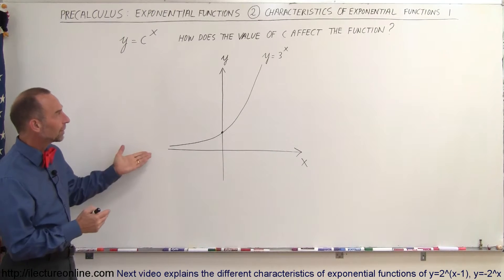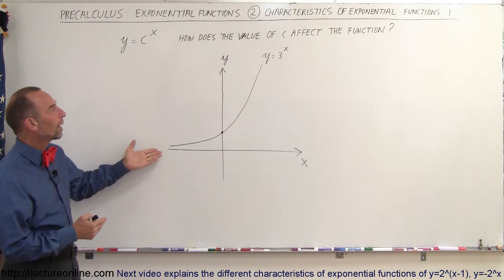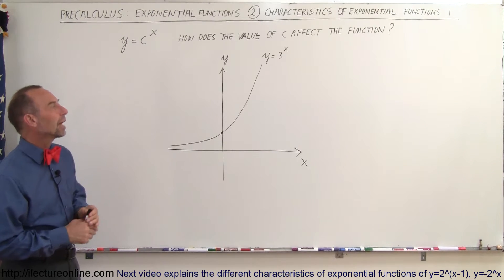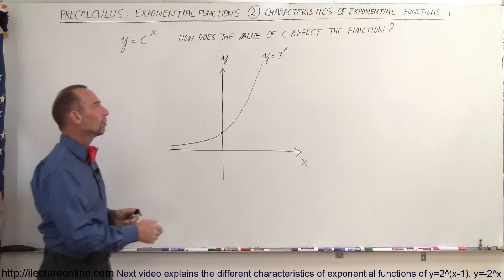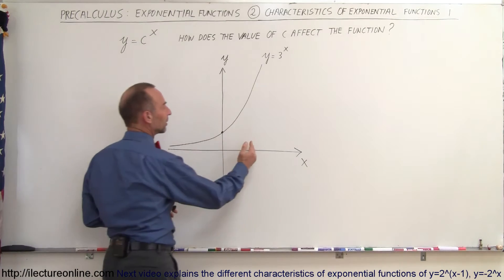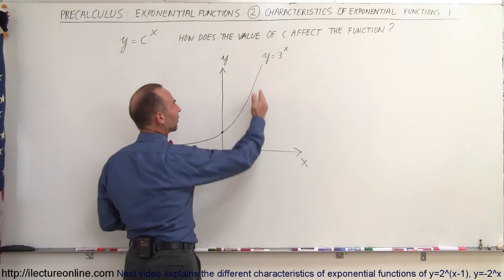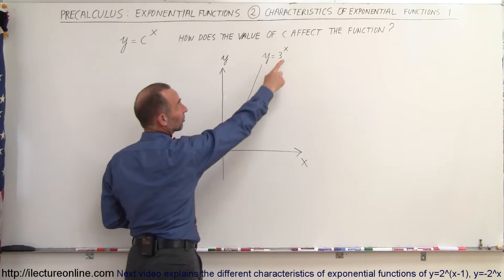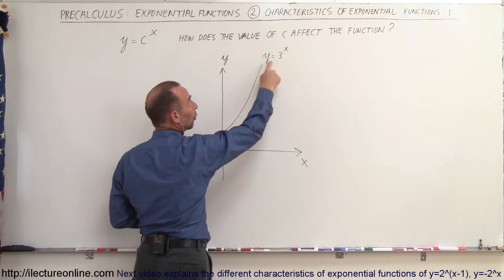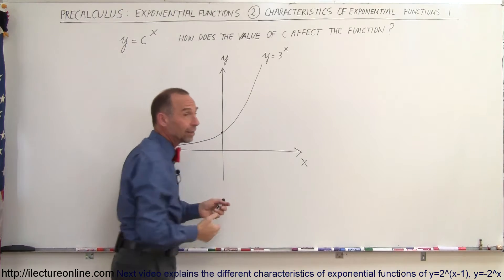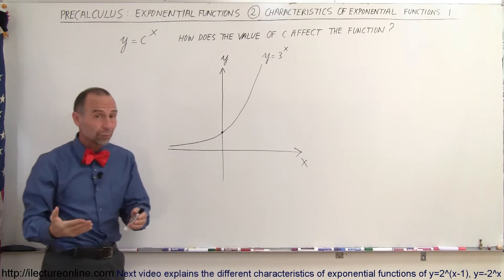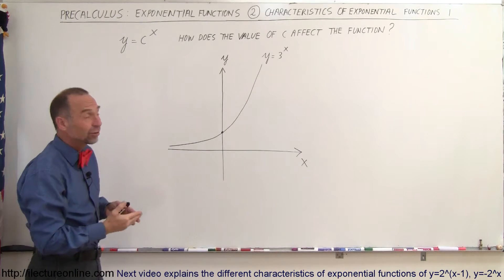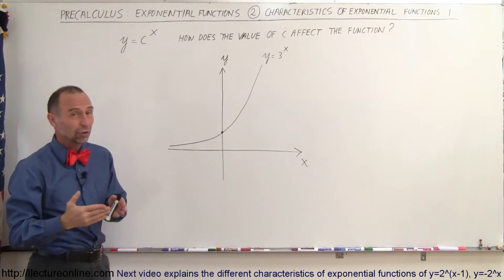Here we have y equals 3 to the x. Notice that as x gets bigger, y gets bigger much faster. For example, when x is equal to 2, y is equal to 9. When x equals 3, y is equal to 27, and so forth.